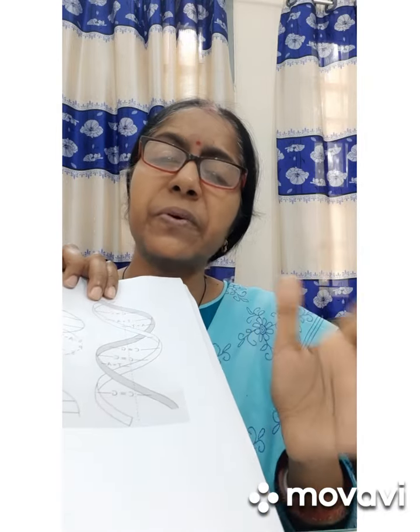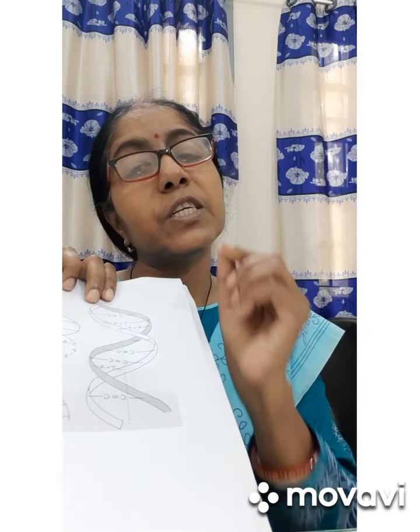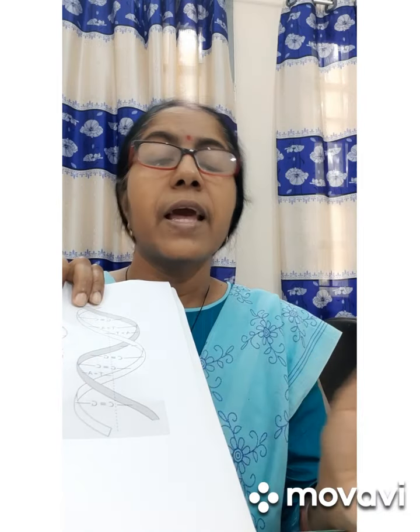What do we mean by genes? DNA strands are coiled around each other forming a double helix. The chemical composition of DNA is composed of three components: number one is sugar, number two is phosphate, and number three is nitrogenous bases.